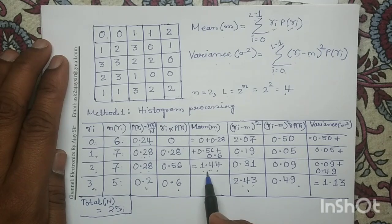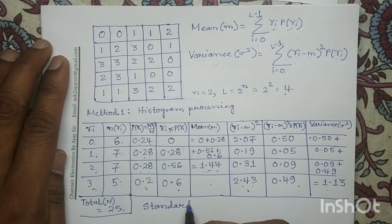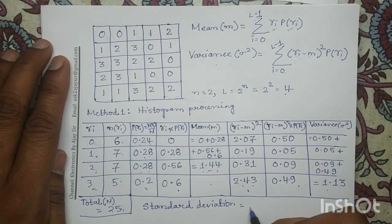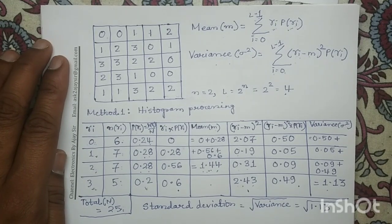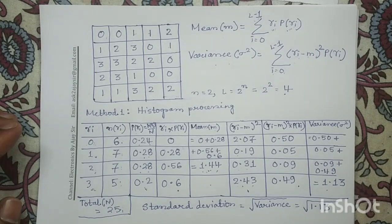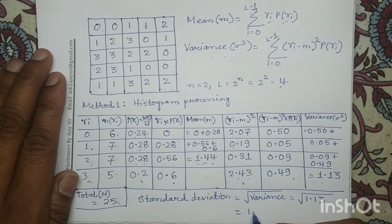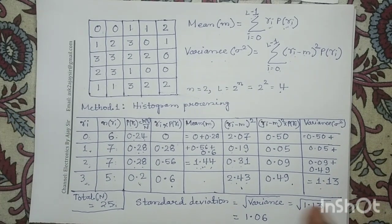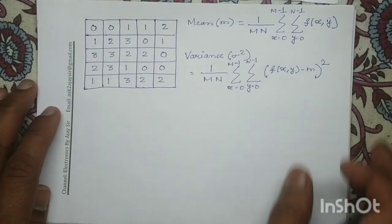Mean is determined as 1.44 and variance is determined as 1.13. There is a simple relationship between standard deviation and variance: the standard deviation equals the square root of the variance, which is square root of 1.13. On simplification, to 2 decimal places, we obtain 1.06. This approach is called the histogram processing approach. The next approach is called the classical approach.